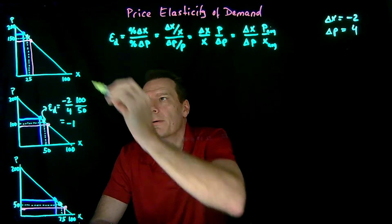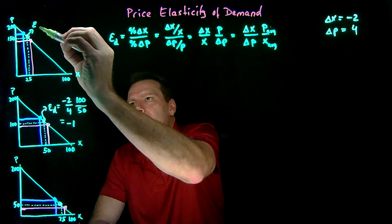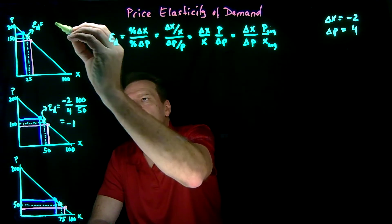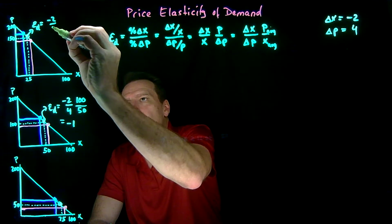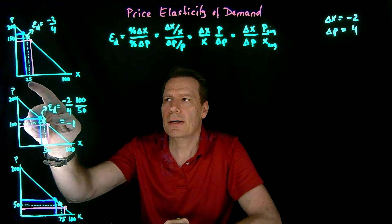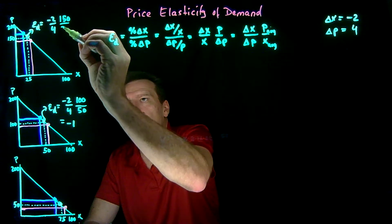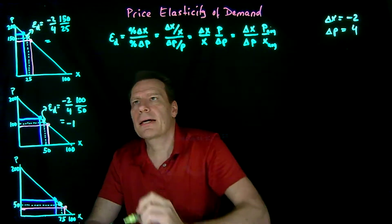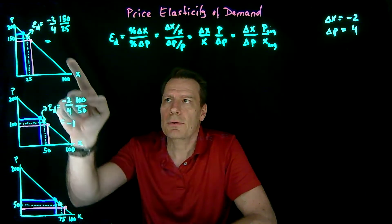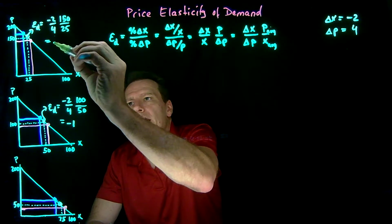Up here, we have the same change in x and change in P — that's just minus 2 over 4 — and then we use the midpoint: 150 divided by 25. When we simplify, we get minus 2 times 150, which is minus 300, divided by 4 times 25, which is 100. So we get minus 3.